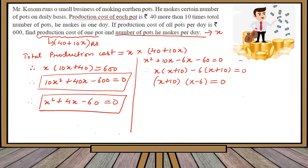After solving this quadratic equation, we get the two factors as (x + 10)(x - 6) = 0, because we know that 10 - 6 is 4. So either x = -10 or x = 6. What was x? X was the total number of pots made per day. Can they be negative? No, they cannot be negative, hence we will discard this value.